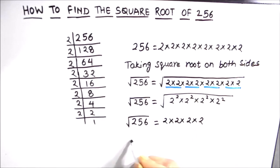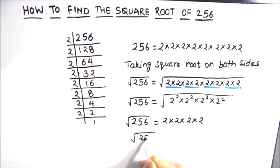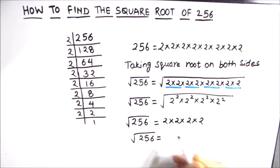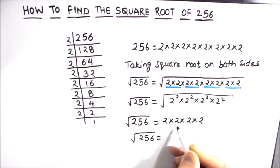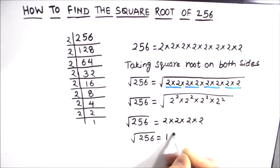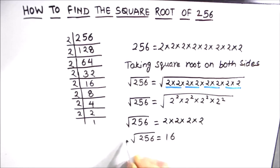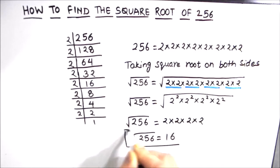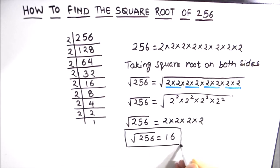So square root of 256 is equal to 2 times 2 is 4, 4 times 2 is 8, and 8 times 2 is 16. So square root of 256 is 16.